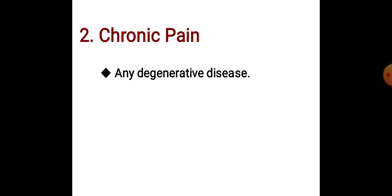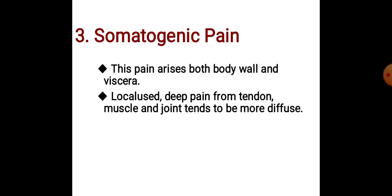2. Chronic pain: Associated with any degenerative disease. 3. Somatogenic pain: This pain arises from both the body wall and viscera. It is deep pain from tendon, muscle, and joint, and tends to be more diffuse.